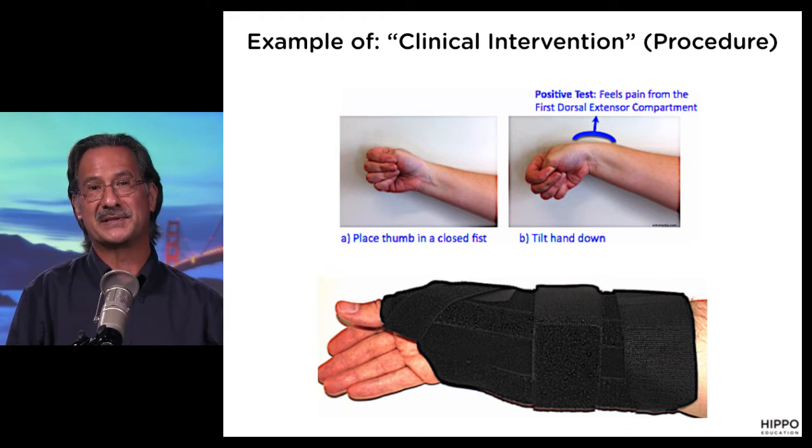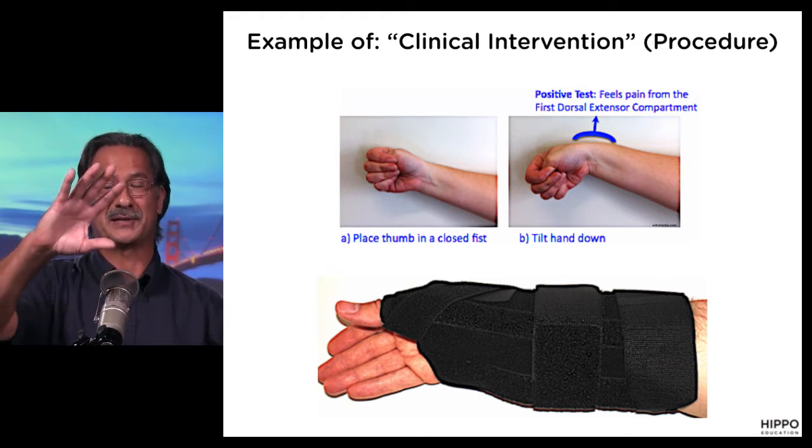That maneuver is done basically by getting the person's thumb inside the palm, wrapping their fingers around, and asking them to ulnar deviate their wrist. When you do that, you elicit pain right there, and that would be positive for this patient's diagnosis: De Quervain's tenosynovitis. We have entrapment of those tendons that run in the first dorsal wrist compartment — positive Finkelstein's test.